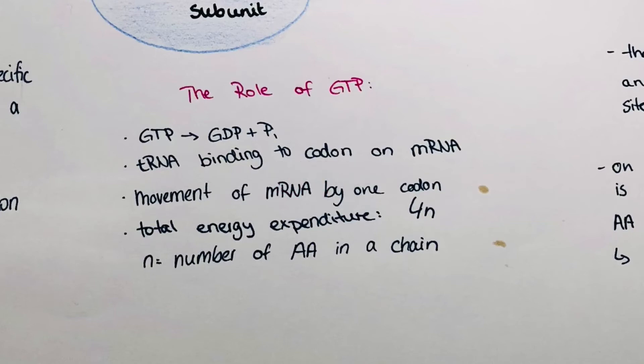Now I want to mention the role of GTP. GTP I mentioned earlier in the initiation phase but it's also the energy that drives the whole process. GTP, so guanine triphosphate, is broken down to GDP, guanine diphosphate, an inorganic phosphate and it is needed when the tRNA is binding to the codon on the mRNA, then for the movement of the mRNA by one codon or the movement of the ribosome again depending on the literature.